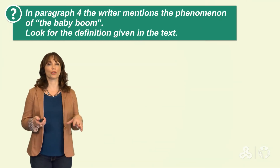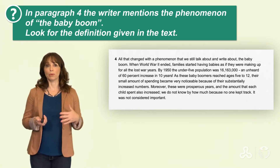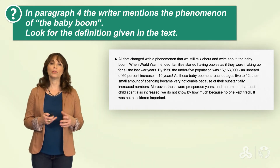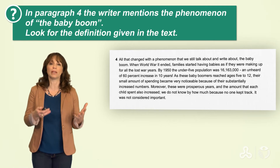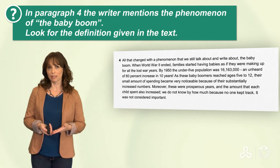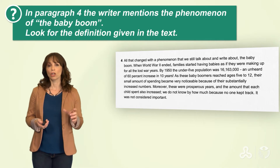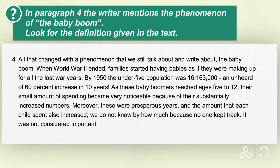In paragraph four the writer mentions the phenomenon the baby boom. Read paragraph four and look for the definition given in the text. Even if you know what baby boom means, we want to see how the writer defines this phrase — scan the text and look for the writer's definition. At the beginning of paragraph four, the writer is talking about the change from children as savers to children as spenders, and says the change occurs with a phenomenon called the baby boom.